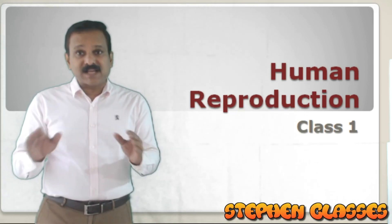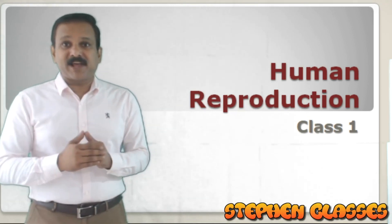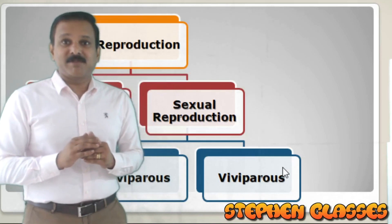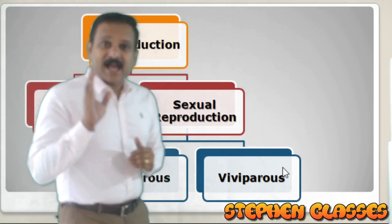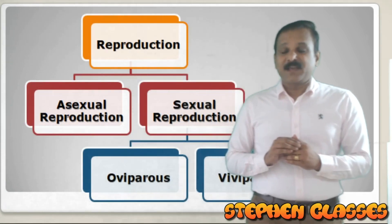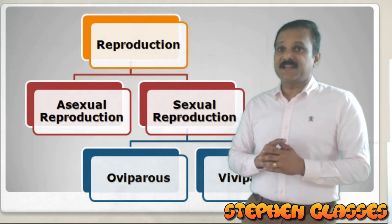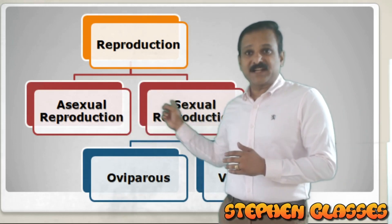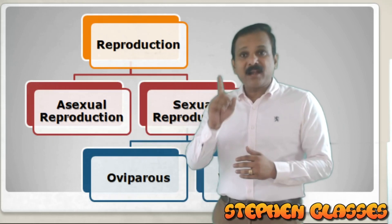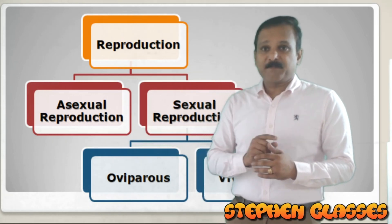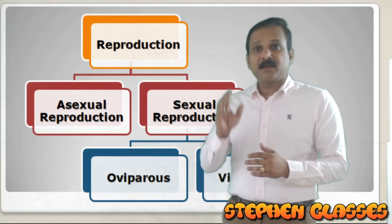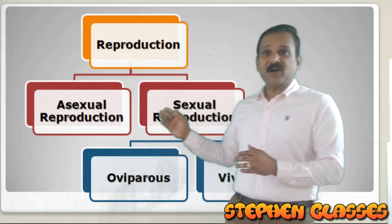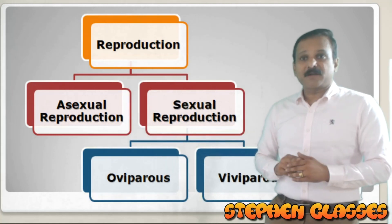To talk more about human reproduction, you should know how reproduction is classified. Reproduction can be classified into asexual reproduction and sexual reproduction. In the case of asexual reproduction, only one individual is involved — it is uniparental. For example, fission, budding, fragmentation, and regeneration are all examples of asexual reproduction.